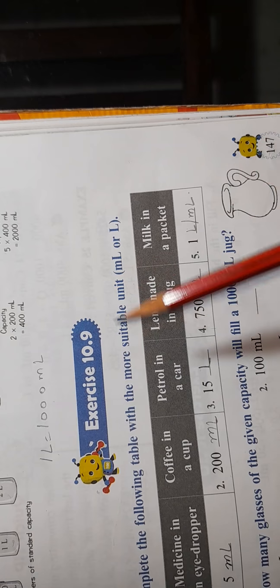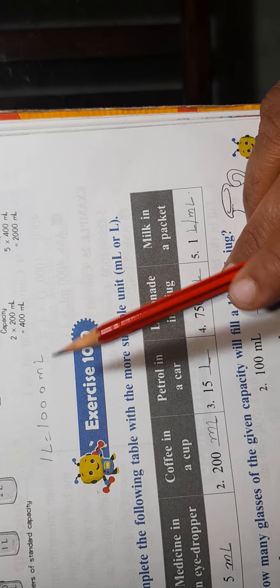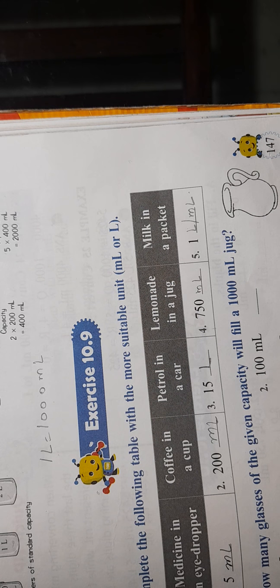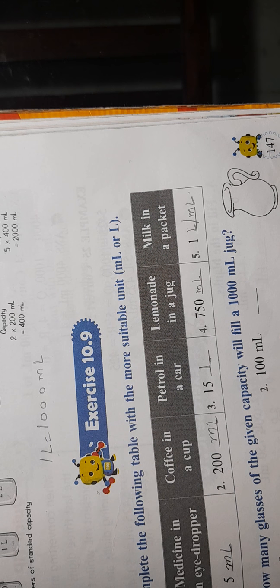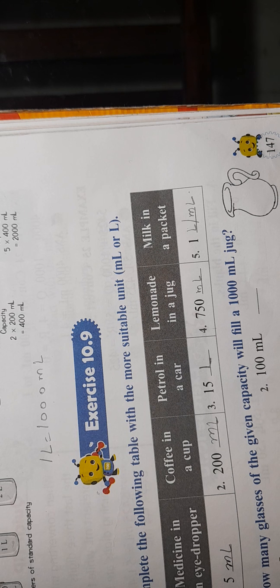Now, 1 liter equals to 1000 ml. Our 1 liter is equal to 1000 ml. Liter is bigger than the milliliter.